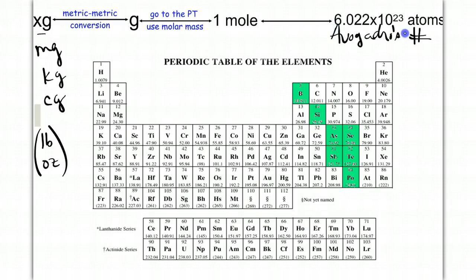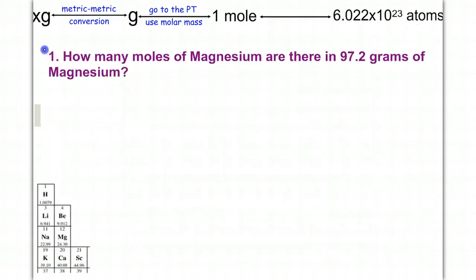We can also go backwards on the map. If I start you with atoms, we could convert to moles. Then from moles, we convert to grams using the periodic table mass. From grams, we could convert to x-gram — like milligram, kilogram, centigram, pound, ounces, etc. So let's do some examples.